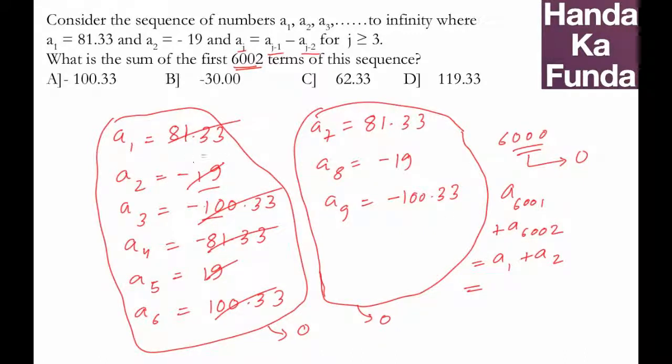a1 is 81.33 and a2 is -19, so all I have to do is 81.33 minus 19, which gives me 62.33. This is option C. Thank you.